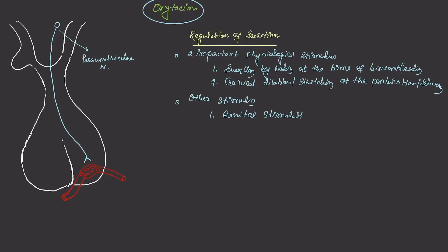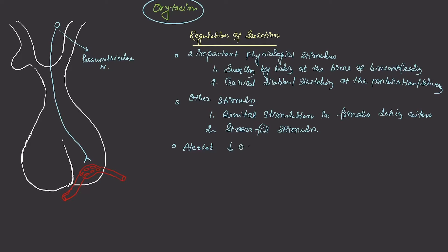Oxytocin can also be increased by stressful stimuli, suggesting a link between oxytocin and stress. In contrast, alcohol or ethanol decreases oxytocin release.